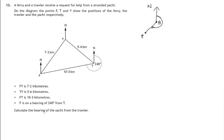So calculate the bearing of the yacht Y, there it is, from the trawler. There's the north direction, so we have to go clockwise from the north direction, right round. There's 240 degrees plus some more to reach this line.